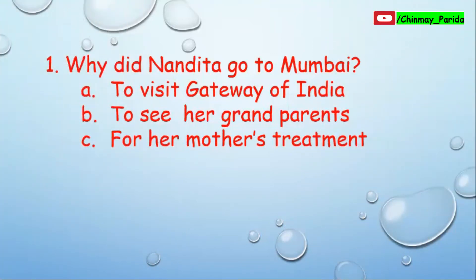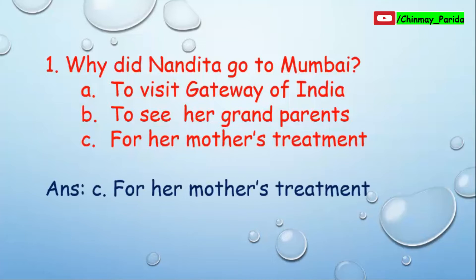Question number one: Why did Nandita go to Mumbai? Option A: to visit Gateway of India. Option B: to see her grandparents. Option C: for her mother's treatment. The answer is option C — for her mother's treatment. Nandita went to Mumbai along with her mother for her mother's treatment.